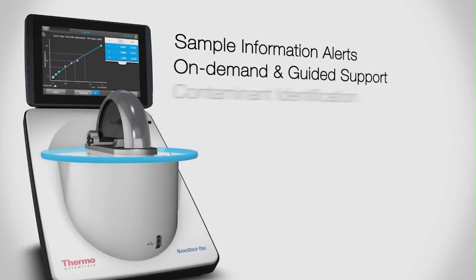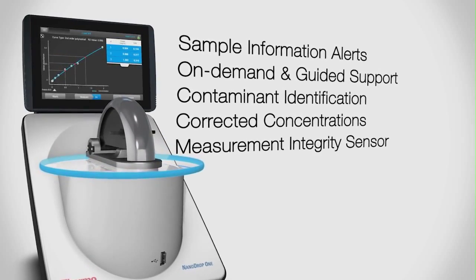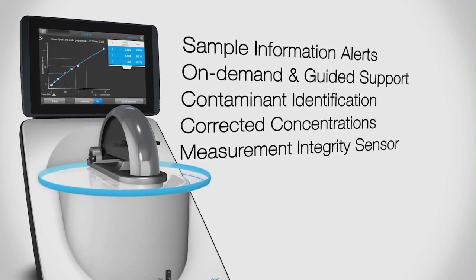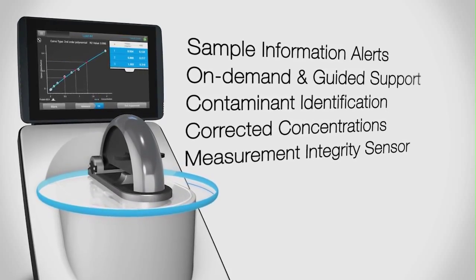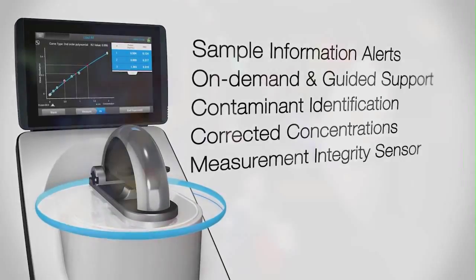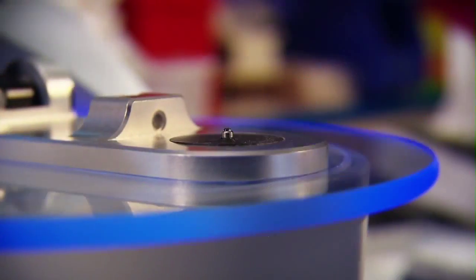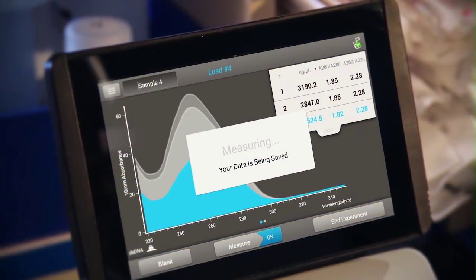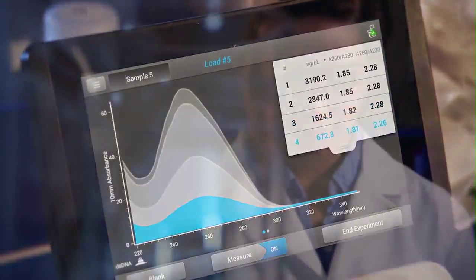Make enlightened decisions with more information from NanoDrop 1 instruments and qualify your sample in seconds before you run your next experiment. NanoDrop 1 UV-VIS micro-volume spectrophotometers. Build confidence with sample intelligence that brings you one step closer to success.